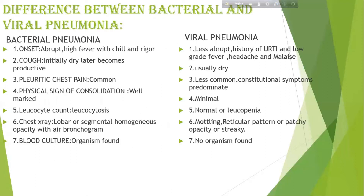Difference between bacterial and viral pneumonia. Bacterial pneumonia: Onset is abrupt, with high-grade fever, chills, and rigors. Viral pneumonia: Less abrupt onset, with history of upper respiratory infection, low-grade fever, headache, and malaise.